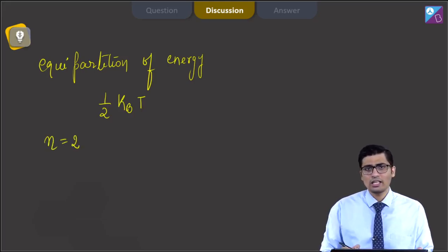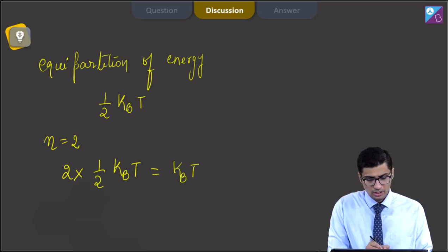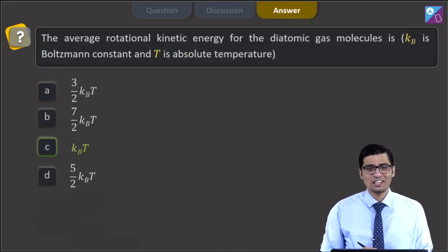So the average rotational kinetic energy will be equal to 2 into half KBT, giving us a value of KBT. Hence, for this question, the correct answer is option C, that is KBT. Now let us proceed to the next question.